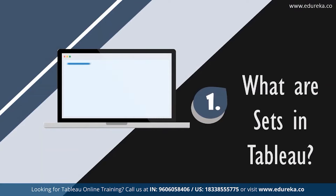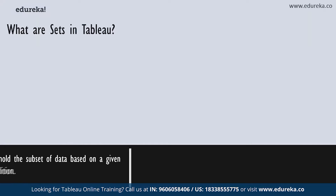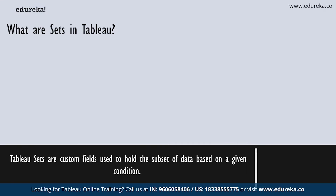Without much ado, let's get started. What are sets in Tableau? Tableau sets are custom fields used to hold a subset of data based on a given condition. In real time, you can create a set by selecting members from a list or from a visualization. You can also do so by writing custom conditions or selecting top or bottom few records in a measure. Basically, a Tableau set is a field which holds certain parts of your data to which you can apply a certain condition.